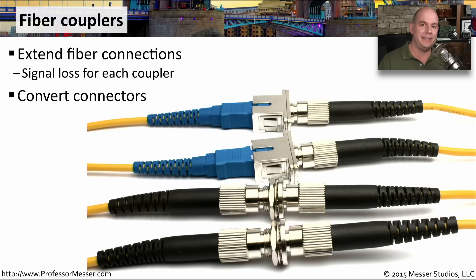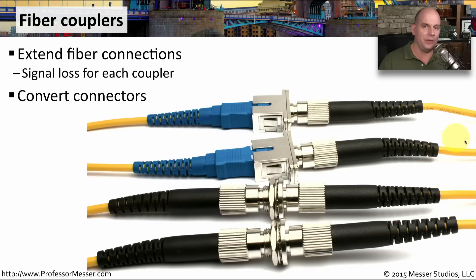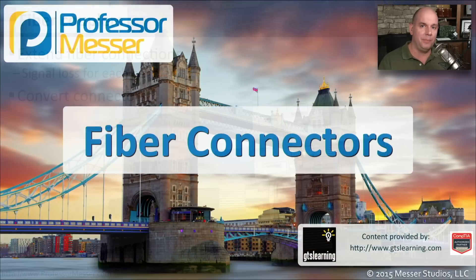A fiber coupler can not only extend one fiber into another, but it can also change the type of connector so that you can easily go from an ST or an LC to an SC connector on the other side, for instance. And by using this coupler, we don't have to go through the very arduous process of re-terminating a fiber connection — we can simply use this coupler to connect the two together.